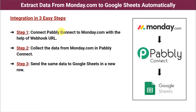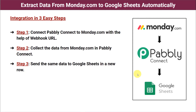Now let me give you the easiest steps possible by which you can also make this automation. These are the three easy steps: Step one is connect Pabbly Connect to Monday.com with the help of a webhook URL. Step two is collect the data from Monday.com in Pabbly Connect. And step three is send the same data to Google Sheets in a new row. Finally, we are going to send the data of the person we have collected in Pabbly Connect to Google Sheets.